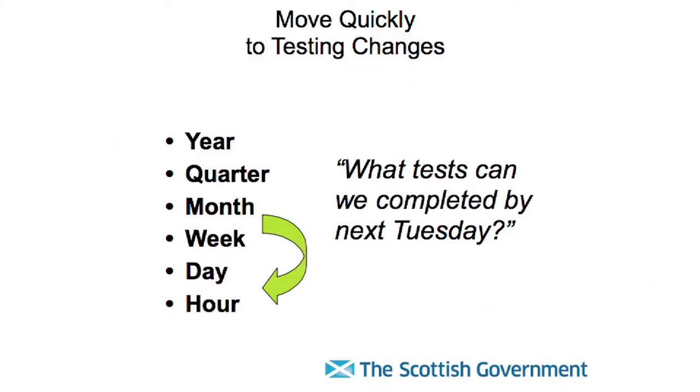You only learn as quickly as you can test. Testing once a year or having data once a year is not really going to lead to improvement. Testing monthly is probably a struggle. It's thinking about what you can actually test on a daily or weekly basis. It's all about rapid, small-scale tests — small so the impact on the population as a whole is minimal. If you're thinking monthly, think about how you could do it weekly or possibly daily.